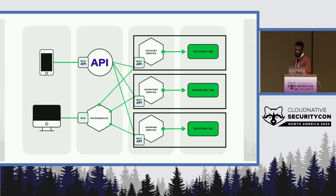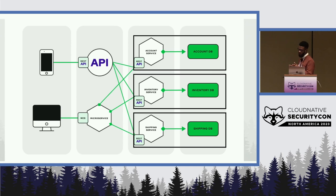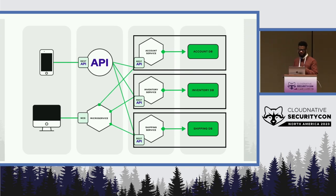From our microservice application example, you'll see that each of the services is on its own separate container, specified by the black rectangle. Containerization has really become a popular approach for packaging and deploying applications in recent years. It offers several benefits like portability — containers can run on any system as long as that system supports containerization technology, making it very easy to move applications between different environments, such as from development to production. Containers also support isolation — they provide a level of isolation for applications, meaning they are isolated from each other and from the host system, which reduces the risk of conflict between different applications and their dependencies.